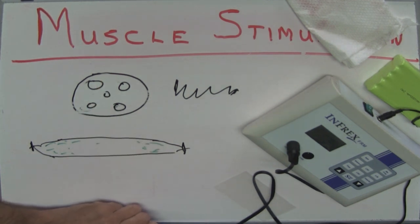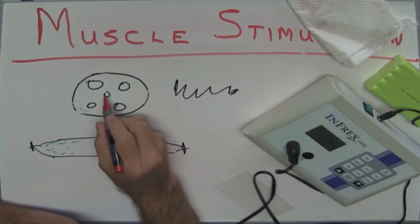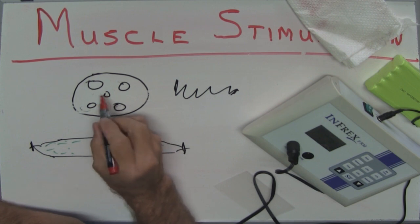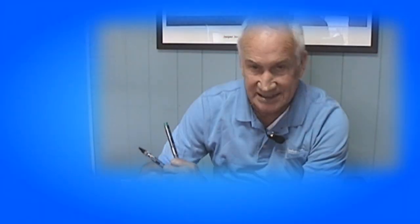with electricity it's an opposite. Here's the problem on an opposite. The first thing we will fire using electricity is not the small bundle, the small motor nerve within the bundle, it's the larger diameter. So we are firing exactly opposite the way we would if we were actually doing it volitionally with no electrotherapy.